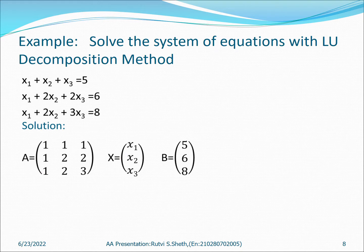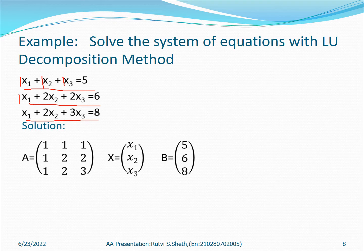Here is one example. We identify matrix A from the coefficients of X: the first row is [1, 1, 1], the second row is [1, 2, 2], and the third row is [1, 2, 3]. The values of B are 5, 6, and 8. The unknowns X1, X2, X3 are what we need to solve.